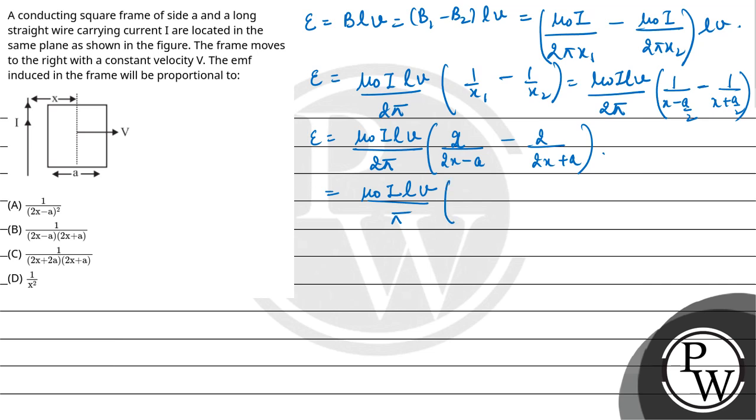Now take the LCM here. It would be 2x minus A into 2x plus A. So here it will be 2x plus A minus 2x minus A, minus minus will get plus. So here it will be mu naught I LV upon pi into 2a upon 2x minus A into 2x plus A.